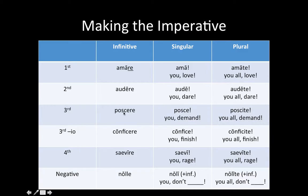The third conjugation is a little bit different. The singular is the same — you drop the -re and you're left with a singular command: 'you, demand.' But before you throw the -te on to make it plural, you have to switch that -e to an -i. So 'posce' becomes 'poscite': 'you all, demand.' Similarly, 'conficere' — drop the -re and you get 'you, finish.' Change the -e to an -i, throw a -te on the end: 'you all, finish.'